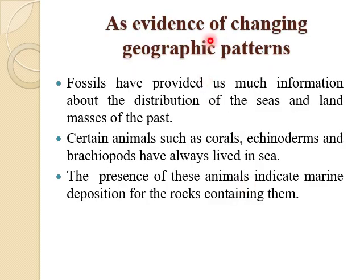Fossils of reindeer from France indicate that once there was an extremely cold climate in France in the past time period. Fossils are also very helpful as evidences of changing geographical patterns. Fossils have provided much information about the distribution of seas and land masses in the past. Certain animals such as corals, echinoderms, and brachiopods always lived in the sea. Their presence in locally dry environments indicates that there may have been a sea in their past time, indicating marine depositions for rocks containing them.